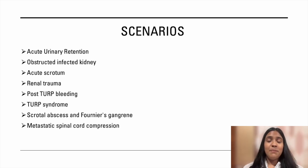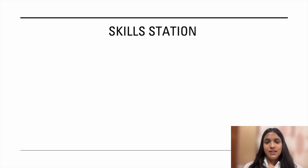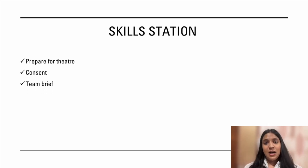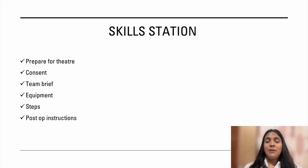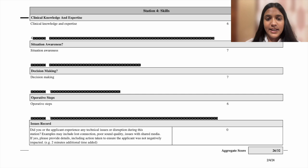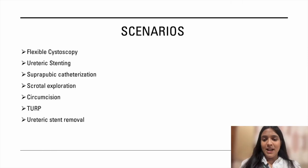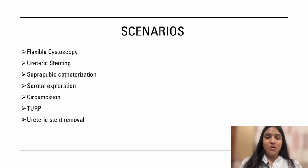In the clinical skills station they may ask you to describe how you prepare for theatre, consent your patients, how you would lead your team brief, the equipment required, steps of the procedure, and post-op instructions. They mark you on clinical knowledge and expertise, situational awareness, decision making, and fluency of operative steps. Commonly asked scenarios include flexible cystoscopy, ureteric stenting, suprapubic catheterization, testicular exploration, circumcision, TURP, and ureteric stent removal.